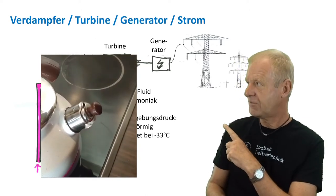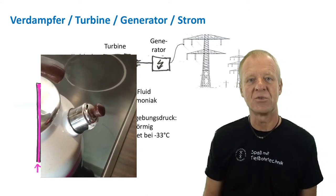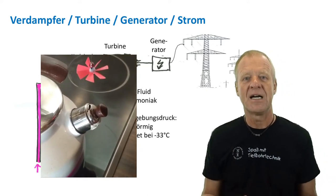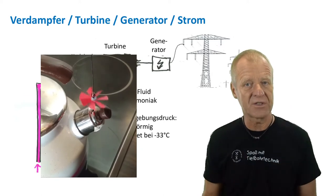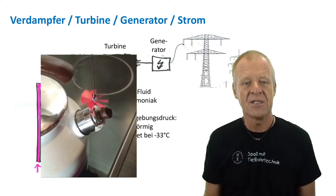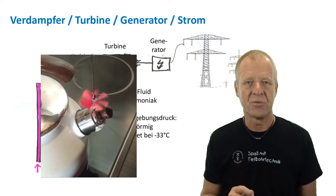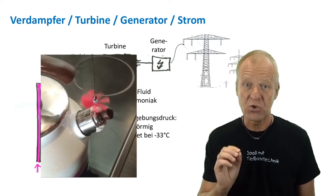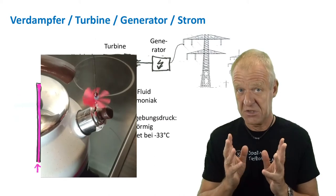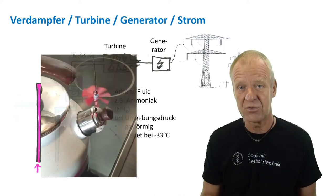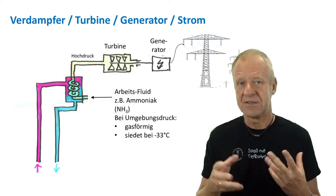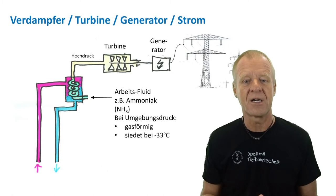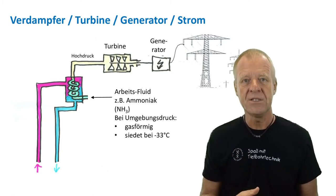This is similar to the experiment I have behind me here. Driven by the steam, the turbine spins at a very high rotational speed. There is an alternator connected to the turbine — it works just like a bicycle dynamo and produces electrical power which can then be redistributed and sold to consumers.